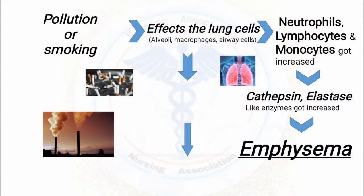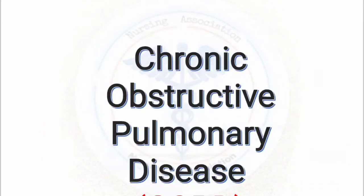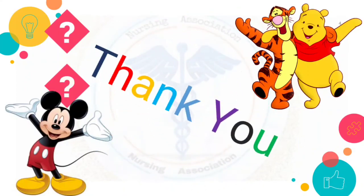As this toxic effect on lung cells is observed, WBC count will directly increase, and lung injury will be seen. This combination of emphysema and lung injury will lead to chronic obstructive pulmonary disease, known as COPD. I hope you all have understood this — thank you for listening.